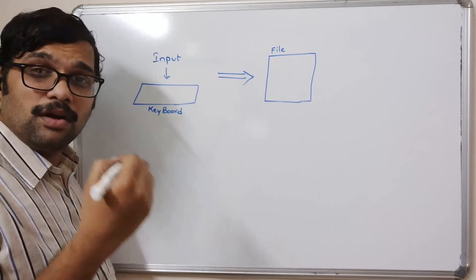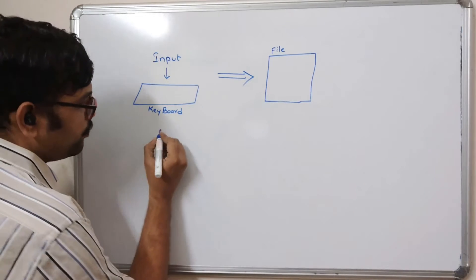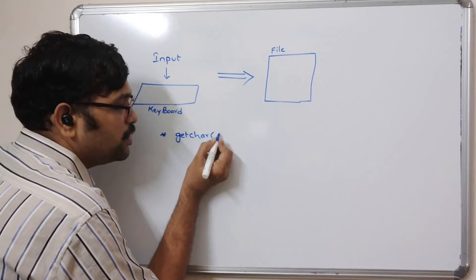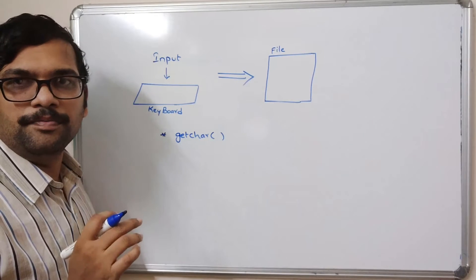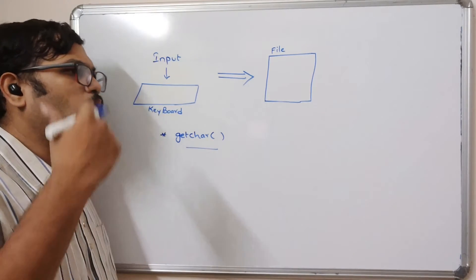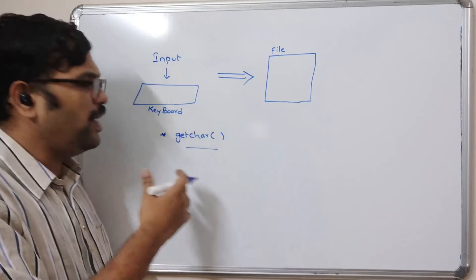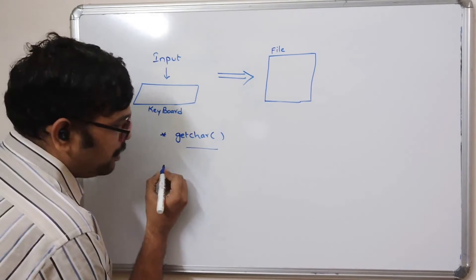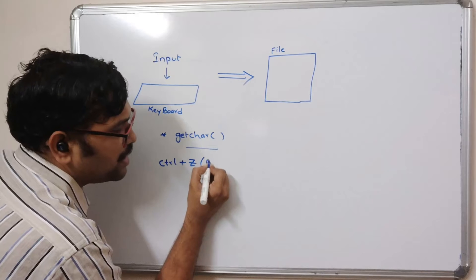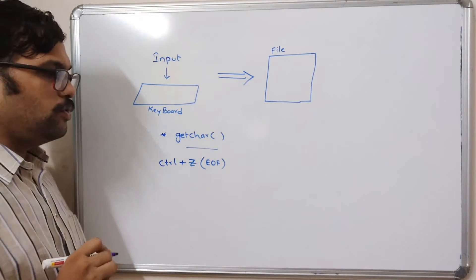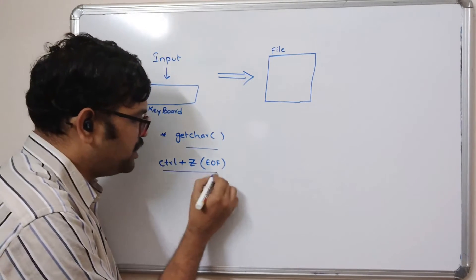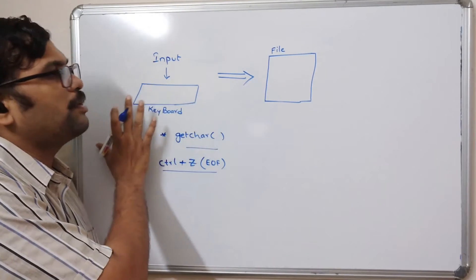We have a lot of input functions which read characters from the keyboard. We can use the getchar() function to read data from the keyboard. We read characters until the user presses Ctrl+Z, which signals end of file. Every character typed will be read from the keyboard up until that point.